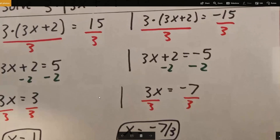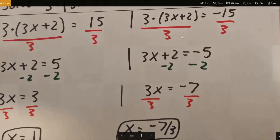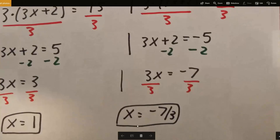And now the second case — we do the exact same thing. Divide by 3, and we get 3x plus 2 is equal to negative 5. Subtract 2, and we get 3x is equal to negative 7. Finally, divide by 3, and x is equal to negative 7 over 3.